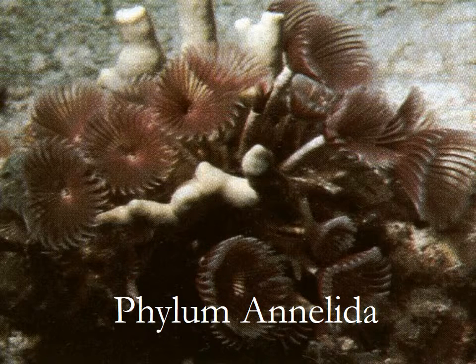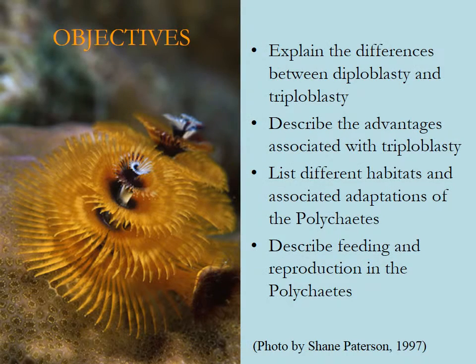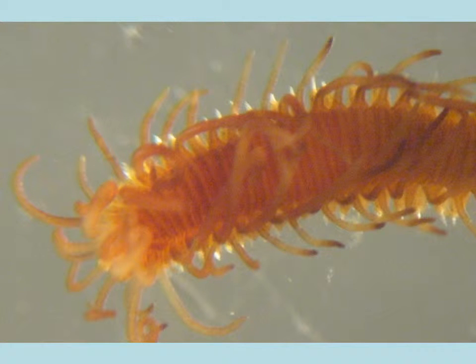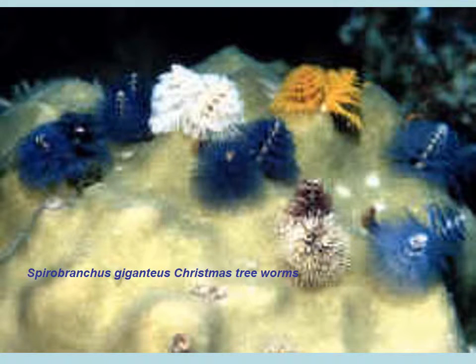Now we'll go through some images of annelids, and then that will be the end of this video. Here are the objectives. Here's a giant earthworm, which is a type of annelid — all the ones that you dig out of your garden; they can get quite big. Here's a polychaete, much like what you've looked at in the lab when you're picking through the dock fuzz. Here are Christmas tree worms — these were taken in or sticking out of a coral.